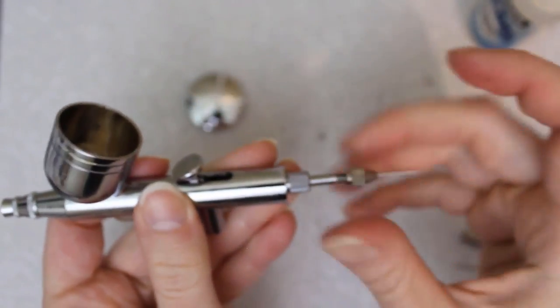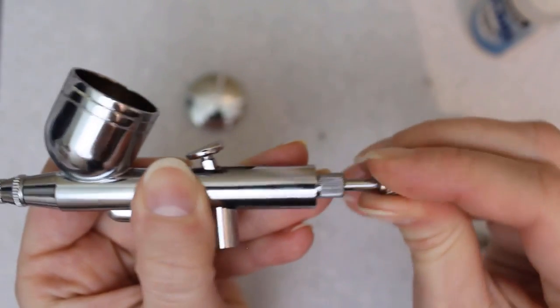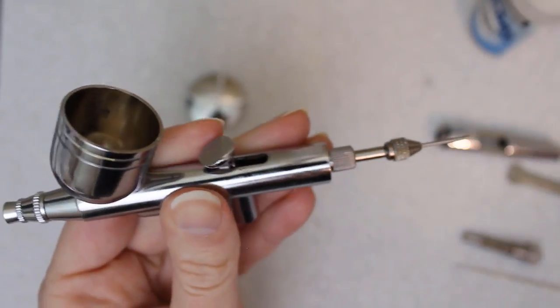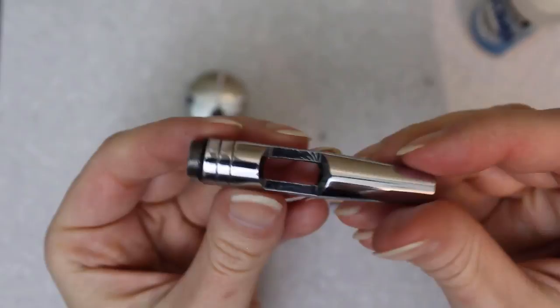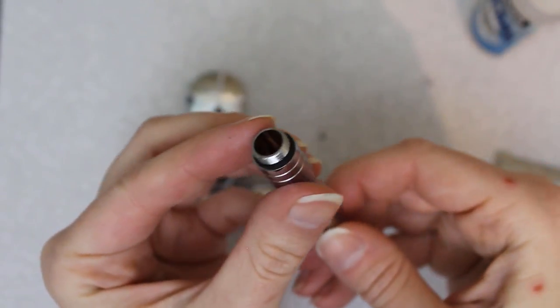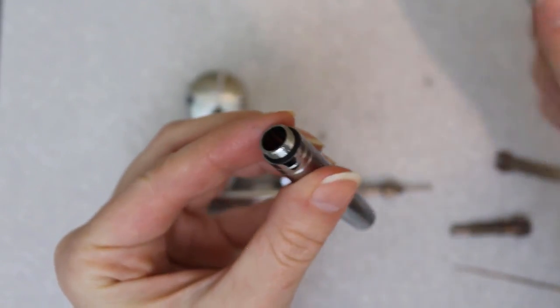When it's all the way in, tighten the chucking nut. Before we screw on the handle, we want to make sure the o-ring on it is lubricated too, then screw it on.